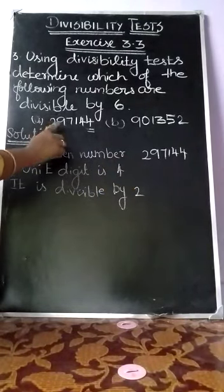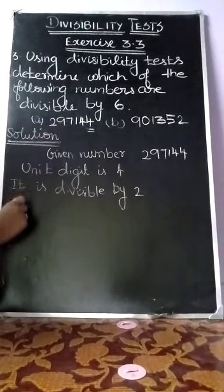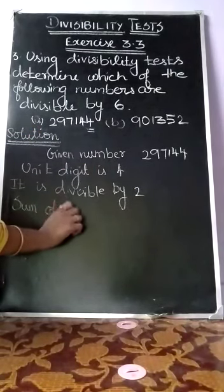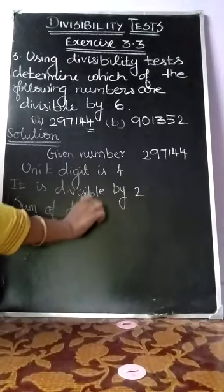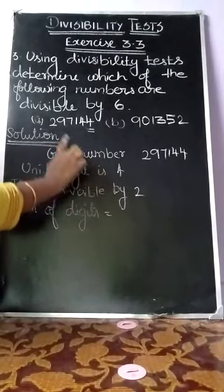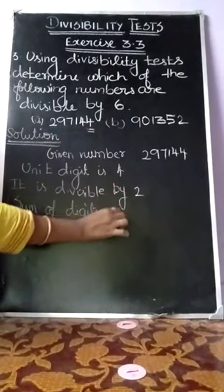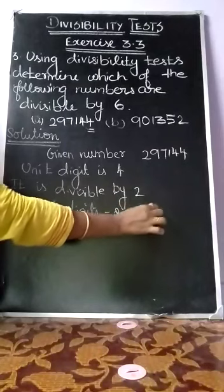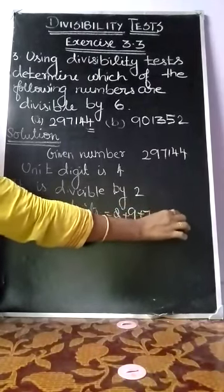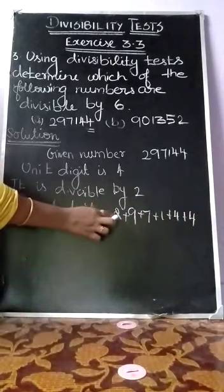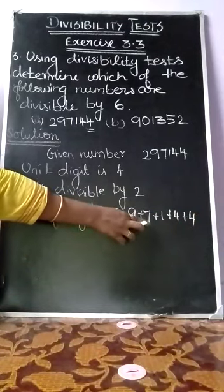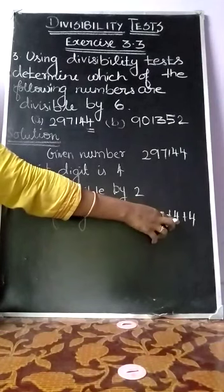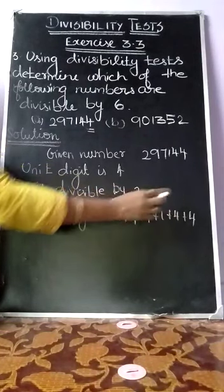Next, we have to check if this value is divisible by 3. We have to find the sum of digits. For 297144: 2 plus 9 plus 7 plus 1 plus 4 plus 4. Adding: 2+9=11, 11+7=18, 18+1=19, 19+4=23, 23+4=27.